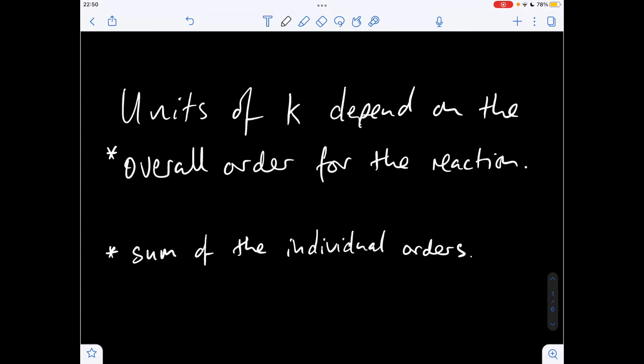What do I mean by overall order? It's the sum of the individual orders. So for the purpose of the video I'll look at zero, first, second, and third order overall and derive the units.